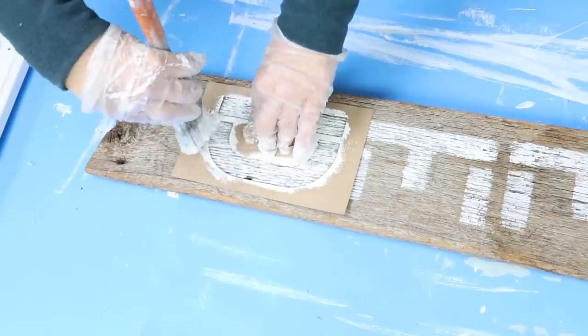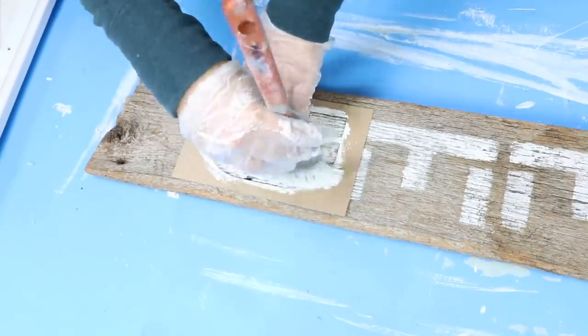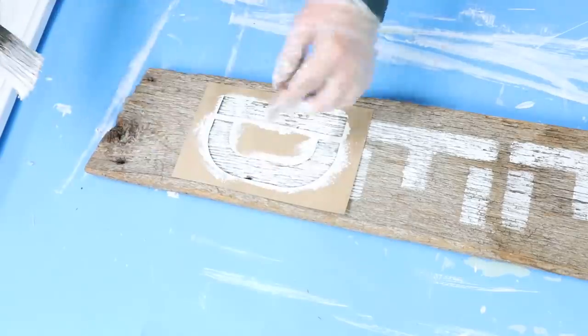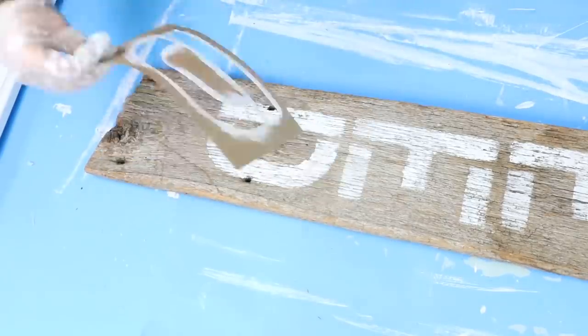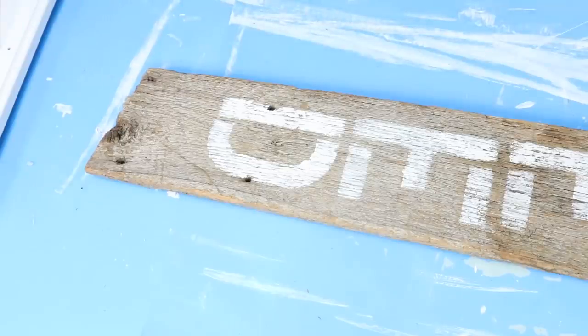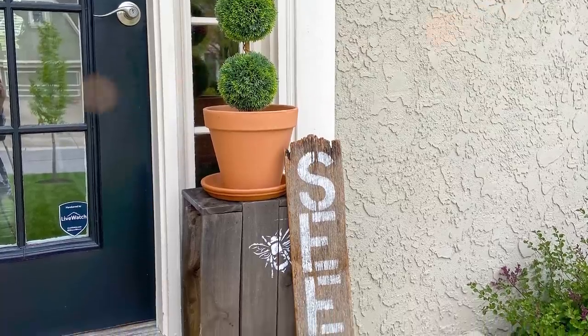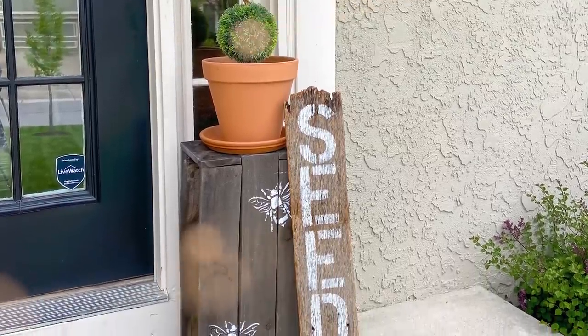Now, if you only do one coat, you don't really have to distress or sand because it's going to look not filled in. So that's kind of my tip - just don't put on as much paint and you won't have to end up pulling it off. And I think this looks great sitting outside in my grouping.